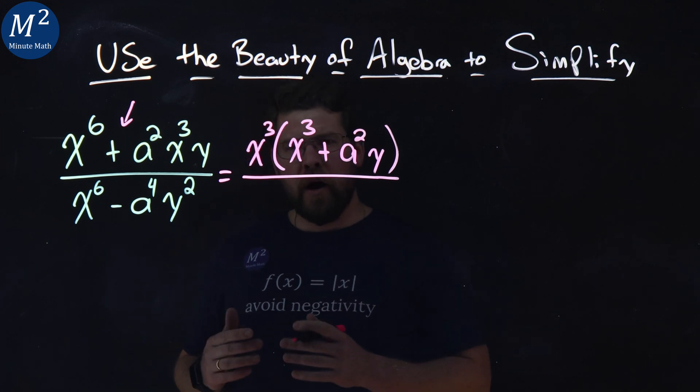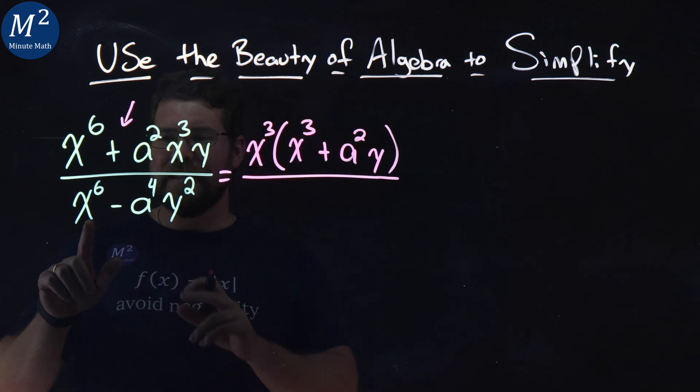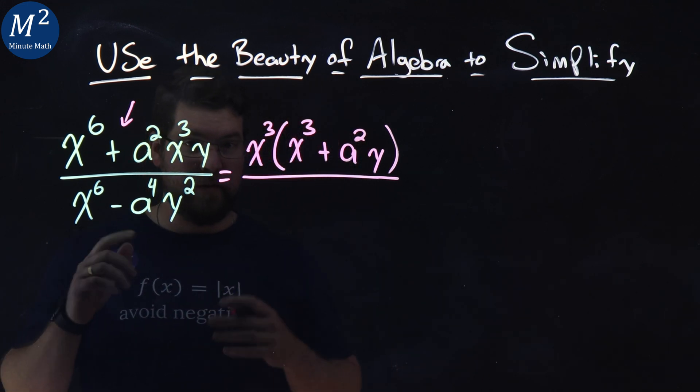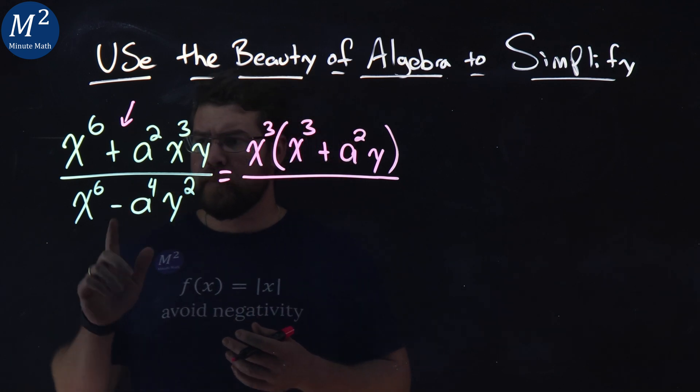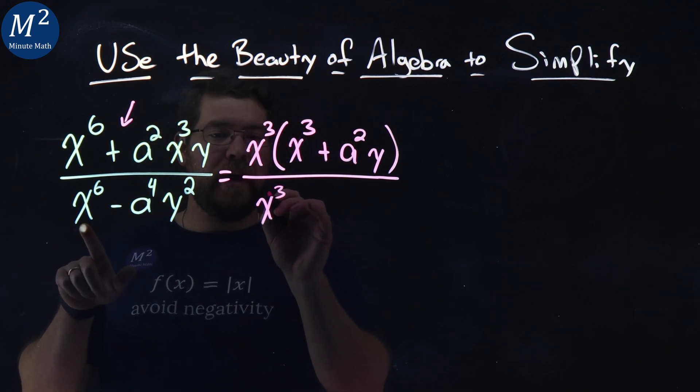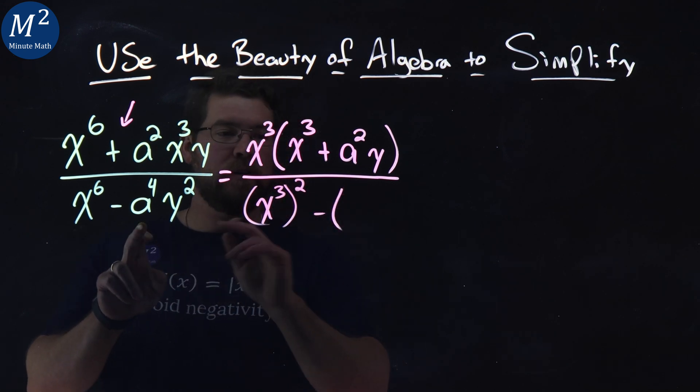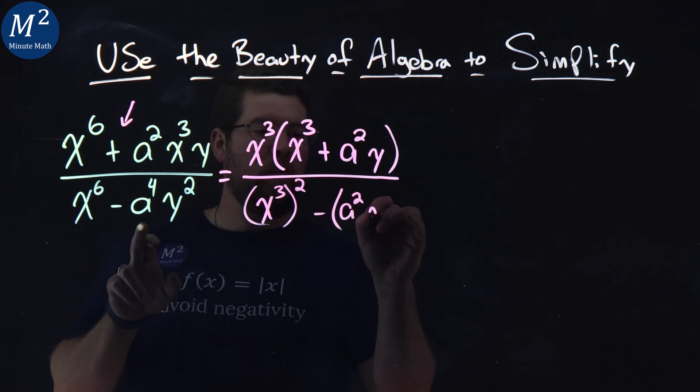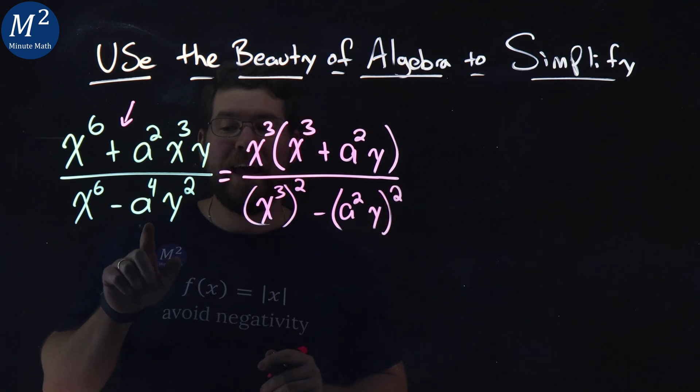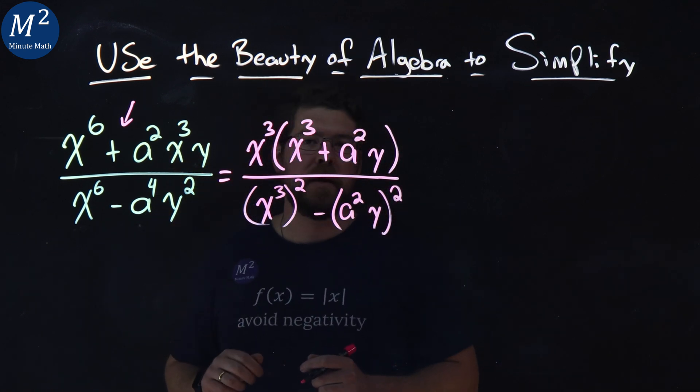Now the denominator I'm also going to work with. I see every single one of these values is a number squared. x to the sixth is x to the third power squared minus the second set of terms a squared y all squared gives me a to the fourth y squared.